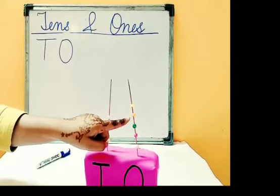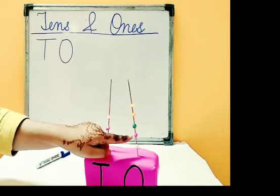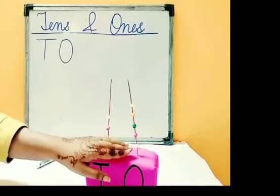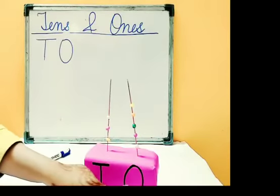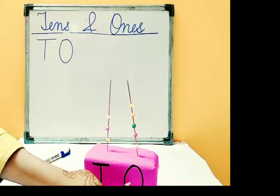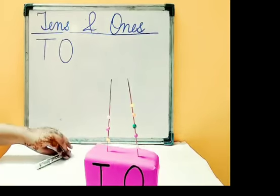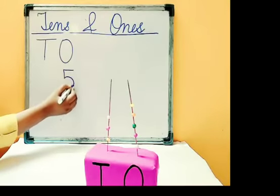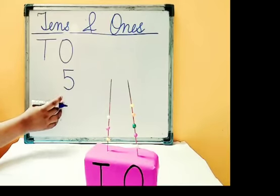One, two, three, four, five. How many beads are there? Here, five beads are there which is present at ones place. So we will write five number, number five at ones place.